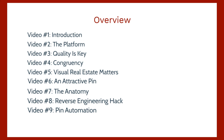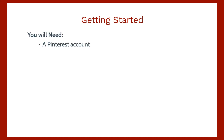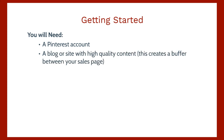Last but not least, video nine is a bonus on pin automation — how to automate the whole tedious, time-consuming process. Now let's talk about what you'll need to get started. Obviously you're going to need a Pinterest account. You'll need a blog or a site with high quality content. You don't really want to direct people directly from your image to your sales page because people don't know you yet — they're still warming up to you.